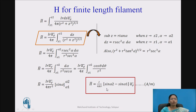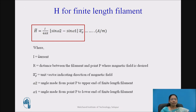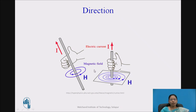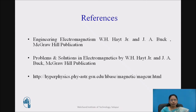This is the equation for the finite length filament. The terminologies are: I is the current, R is the distance between the filament and point P where the magnetic field is desired, and A-phi-bar is the unit vector indicating the direction of the magnetic field. Alpha-2 and alpha-1 are the angles made at point P by the upper end and lower end of the filament respectively. To decide the direction, use the right-hand thumb rule: hold the filament with the thumb pointing in the direction of current, and the curling fingers indicate the direction of the magnetic field.